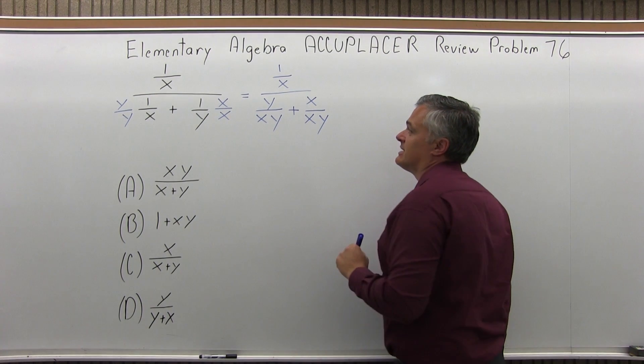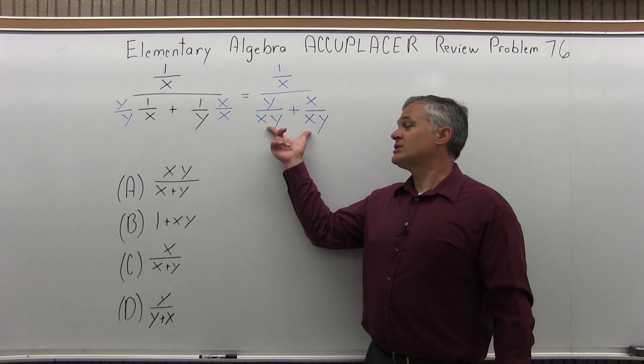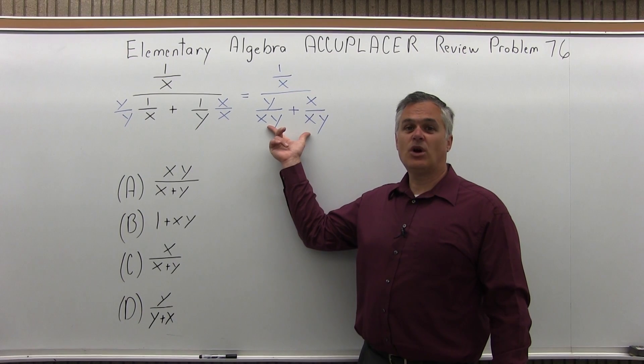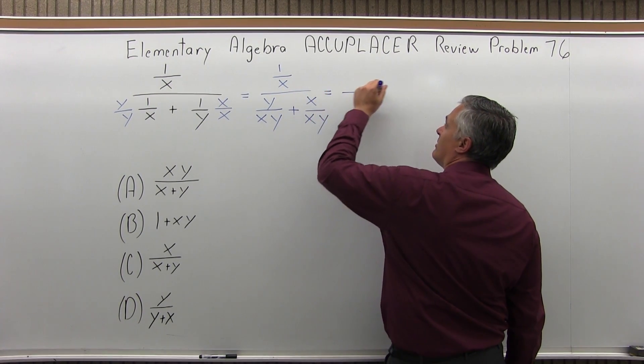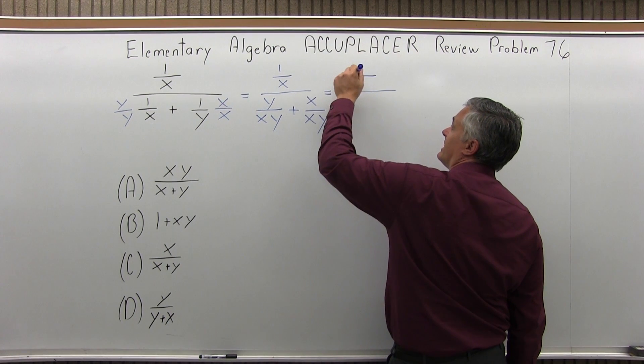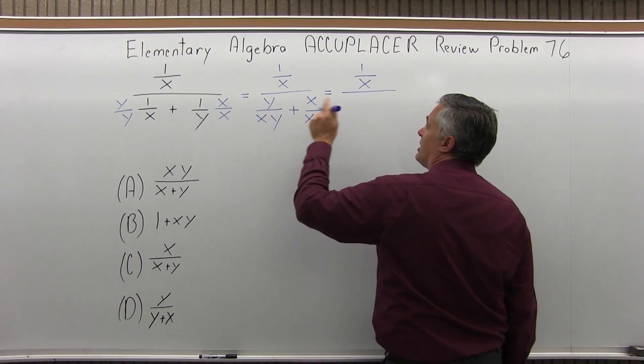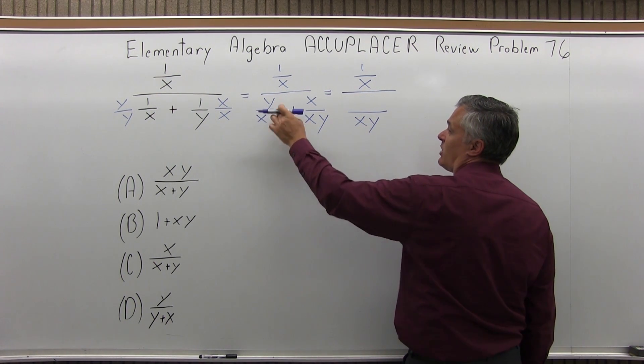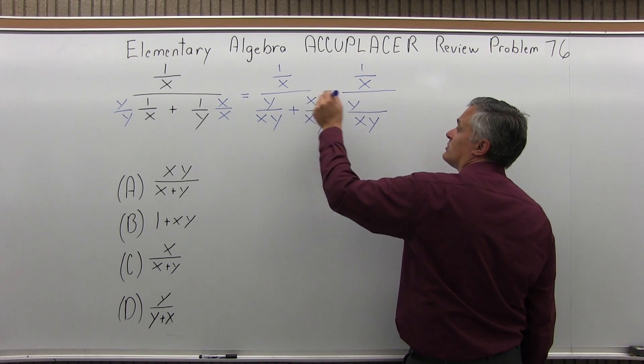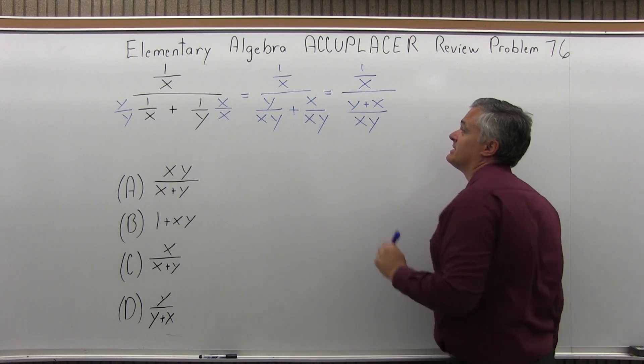Now, the two fractions in the bottom have the same denominator, x times y, so I can combine the numerators. The upper fraction, again, for one more step, will stay as one over x. But the bottom two fractions can be combined over the same denominator, common denominator of xy, y from the first one, plus x from the second one.